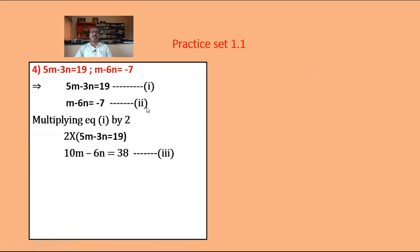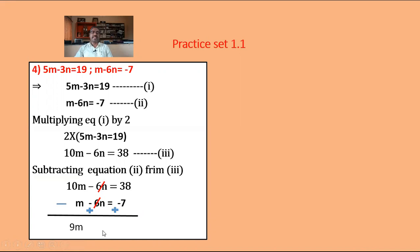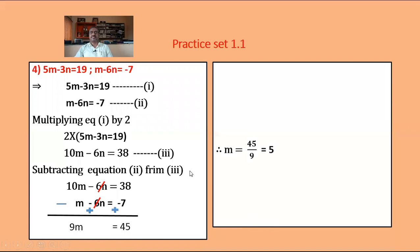From equations 2 and 3, the coefficient of n is the same with the same sign, so subtract equation 2 from equation 3. Equation 3: 10m minus 6n equals 38; equation 2: m minus 6n equals minus 7. Subtracting: minus 6n minus (minus 6n) gets 0. Then 10m minus m equals 9m equals 38 plus 7 equals 45. So m equals 45 upon 9 equals 5.